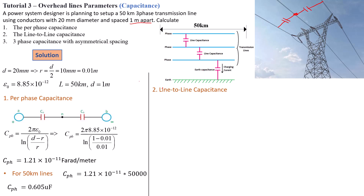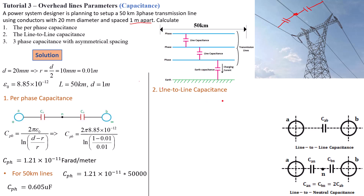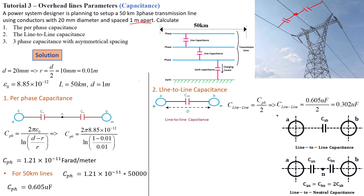To calculate the line-to-line capacitance, consider two conductors — phase A and phase B — with no neutral line, so there is only one capacitance between them. We simply take the per-phase capacitance and divide it by two, giving us the line-to-line capacitance. That is C_line-to-line = C_phase / 2 = 0.302 microfarad.